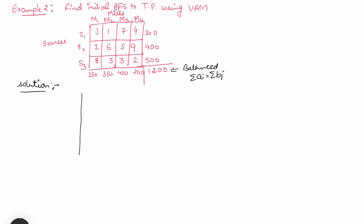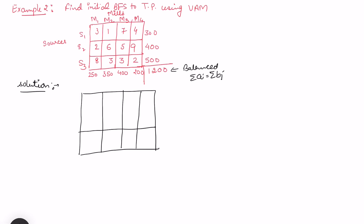We want to apply Vogel's Approximation Method, so let me first quickly make the costs right-aligned and then calculate the penalties. The supply and demand values are given: demand is 250, 350, 400, and 200.